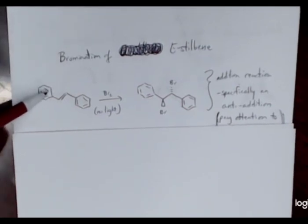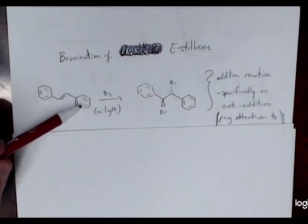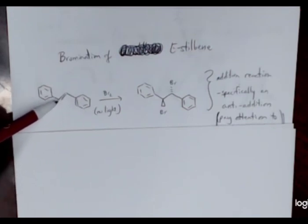We're going to have E-stilbene. You can see a benzene ring. There's a two carbon bridge to the next benzene ring. And in particular, this two carbon bridge does have our pi bond that we see here.